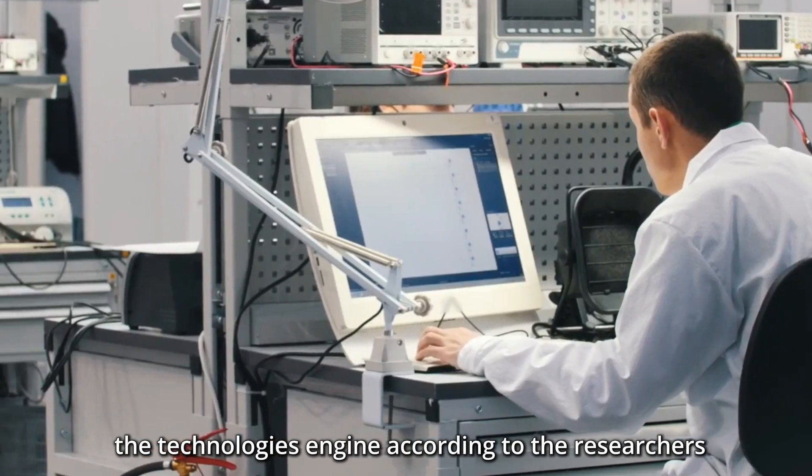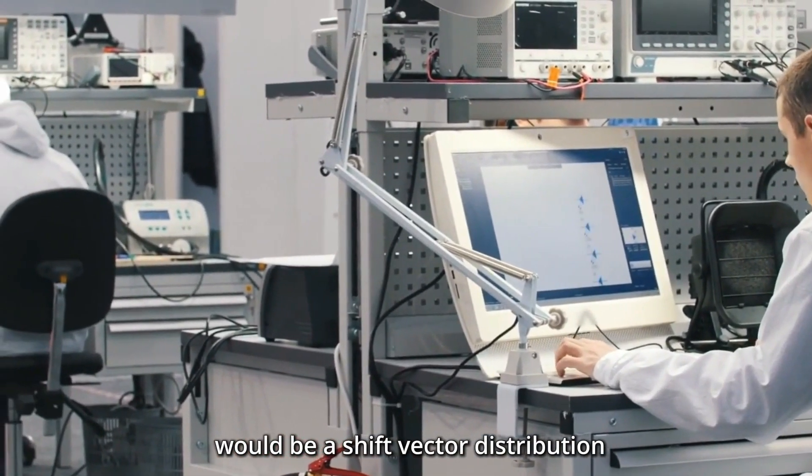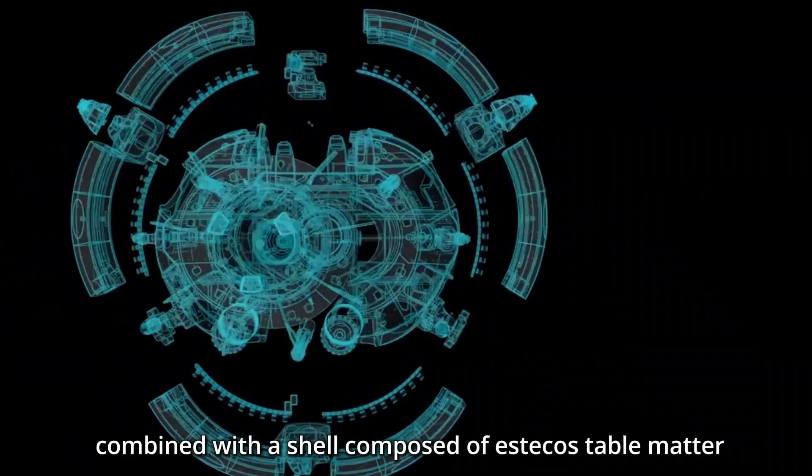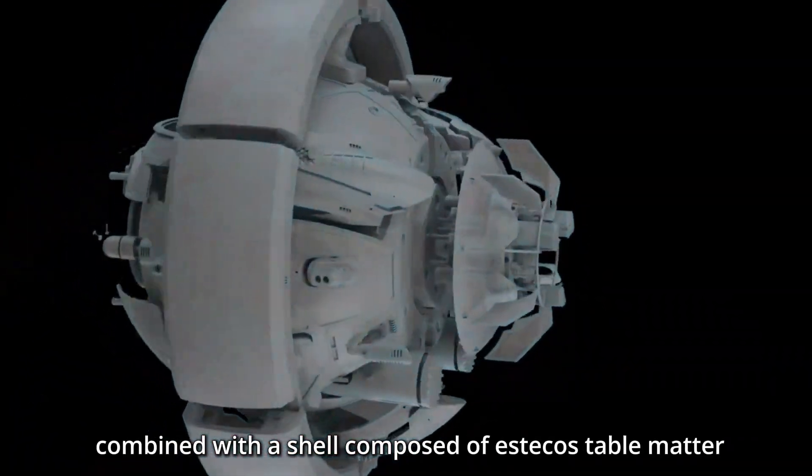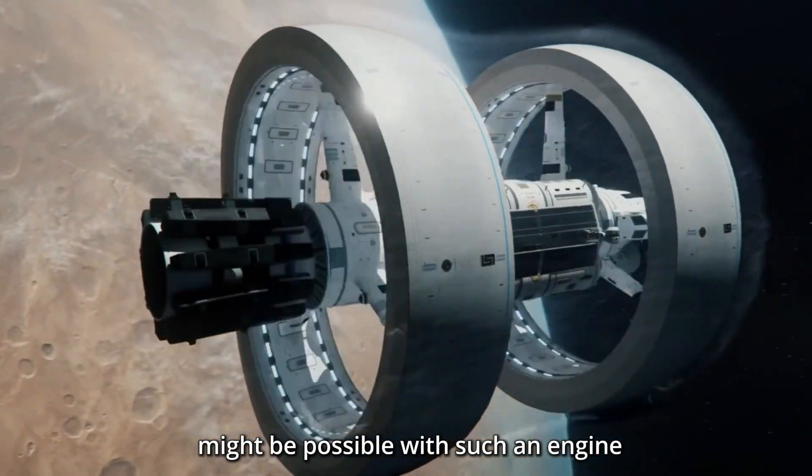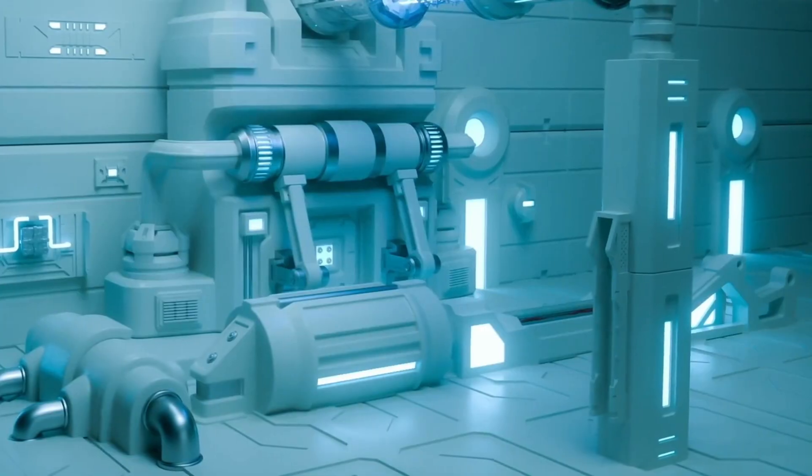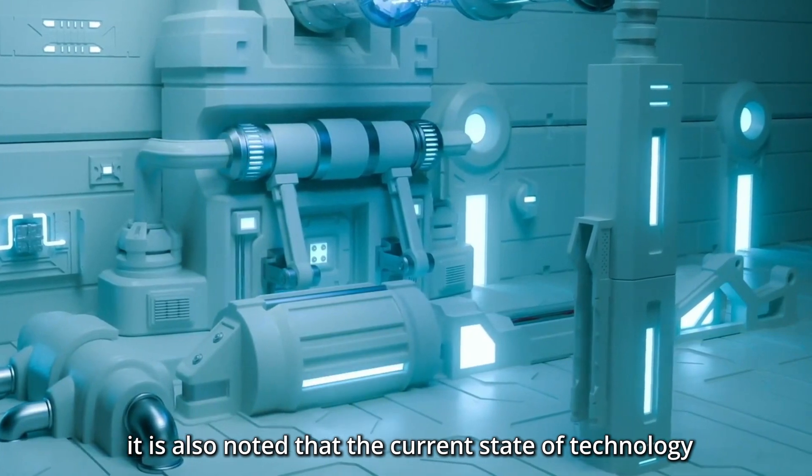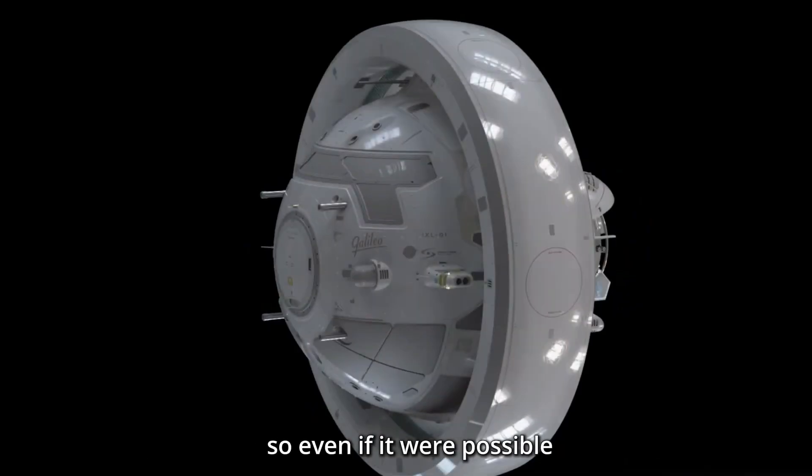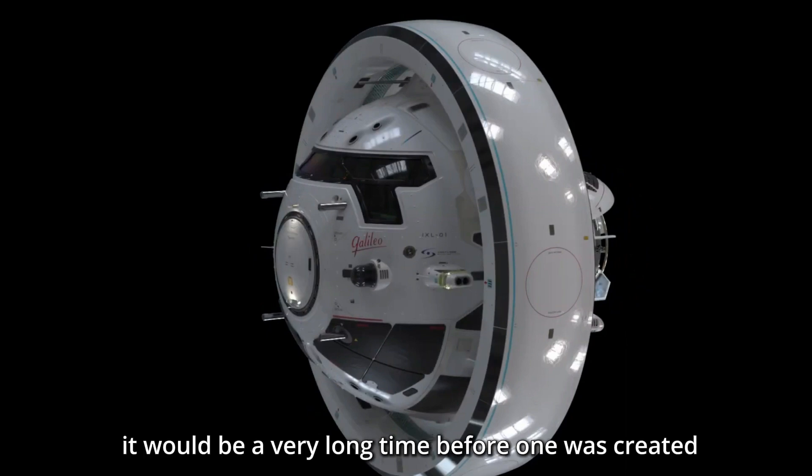The technology's engine, according to the researchers, would be a shift-vector distribution with a design resembling that of Alcubierre combined with a shell composed of stable matter. They also imply that speeds close to the speed of light might be possible with such an engine. It is also noted that the current state of technology makes it extremely difficult to build an engine of that kind, so even if it were possible, it would be a very long time before one was created.